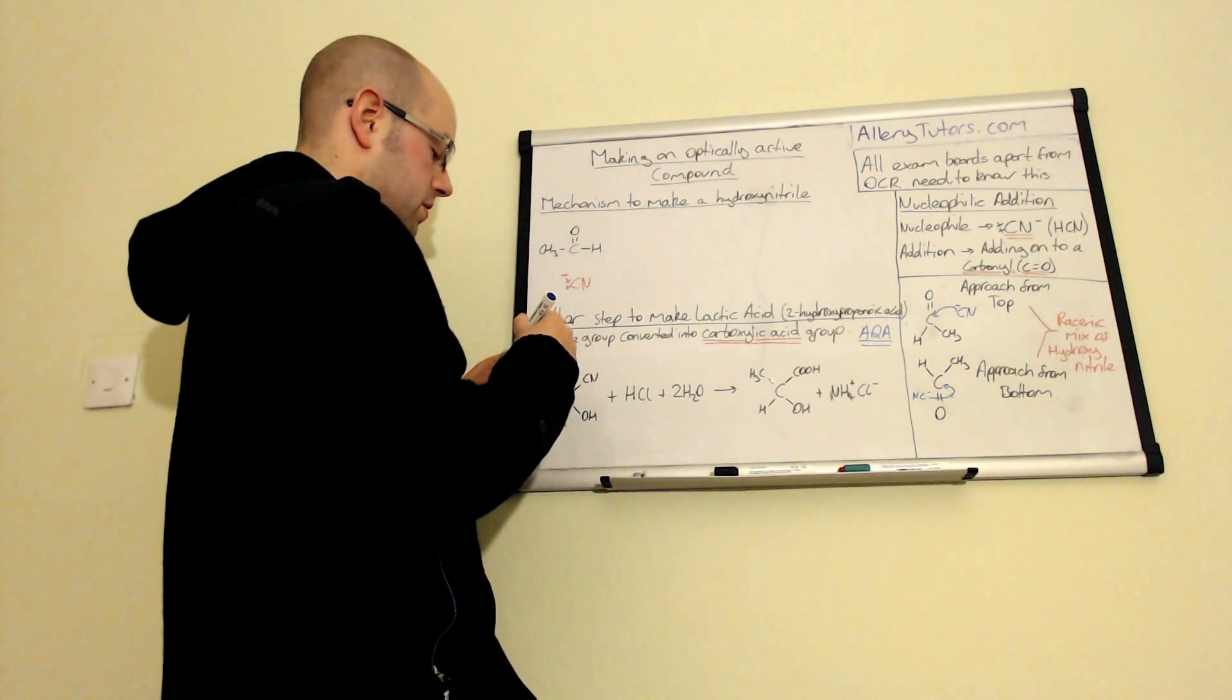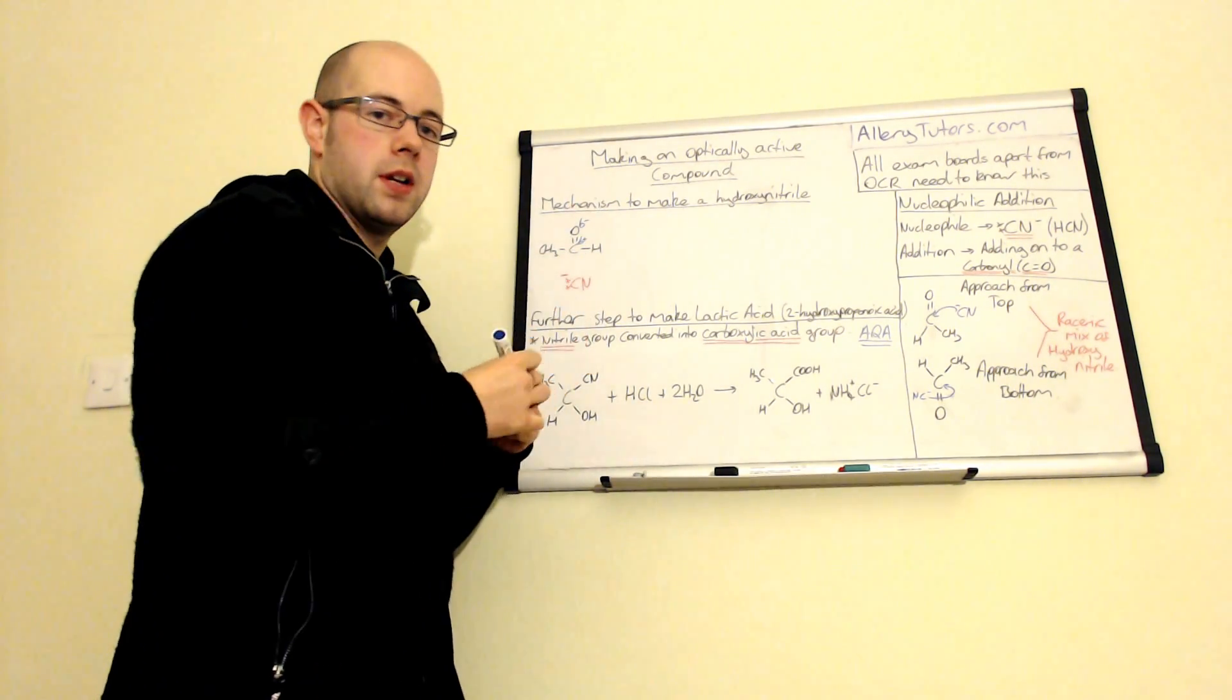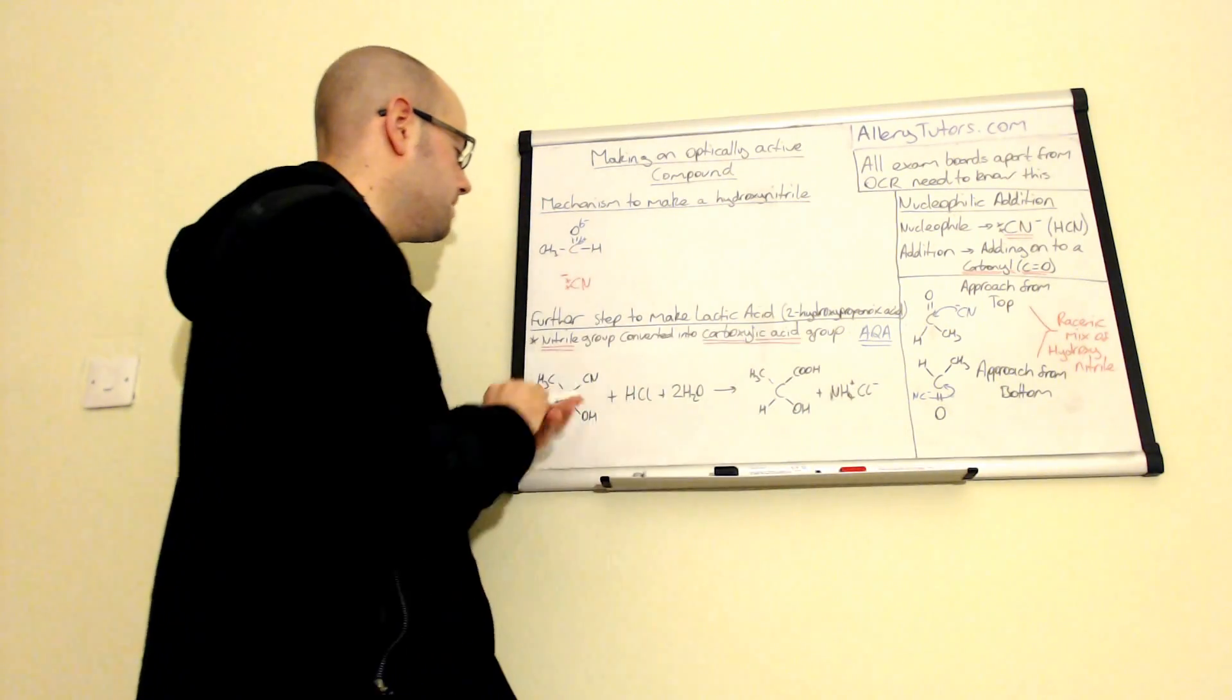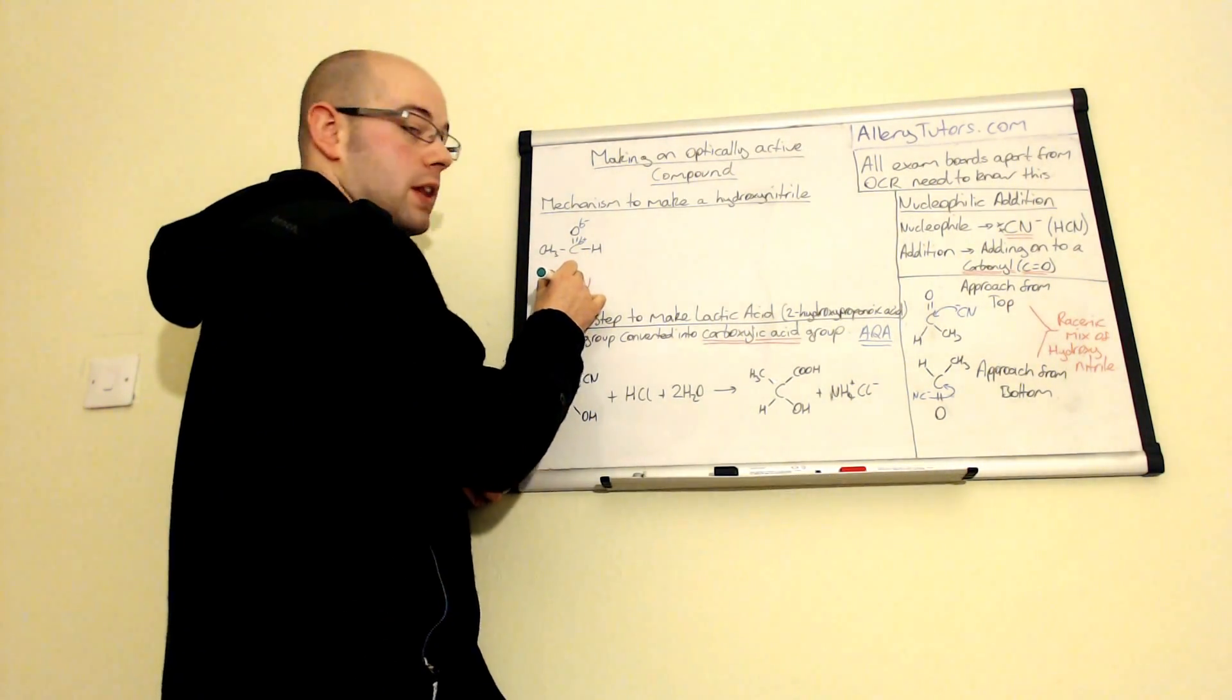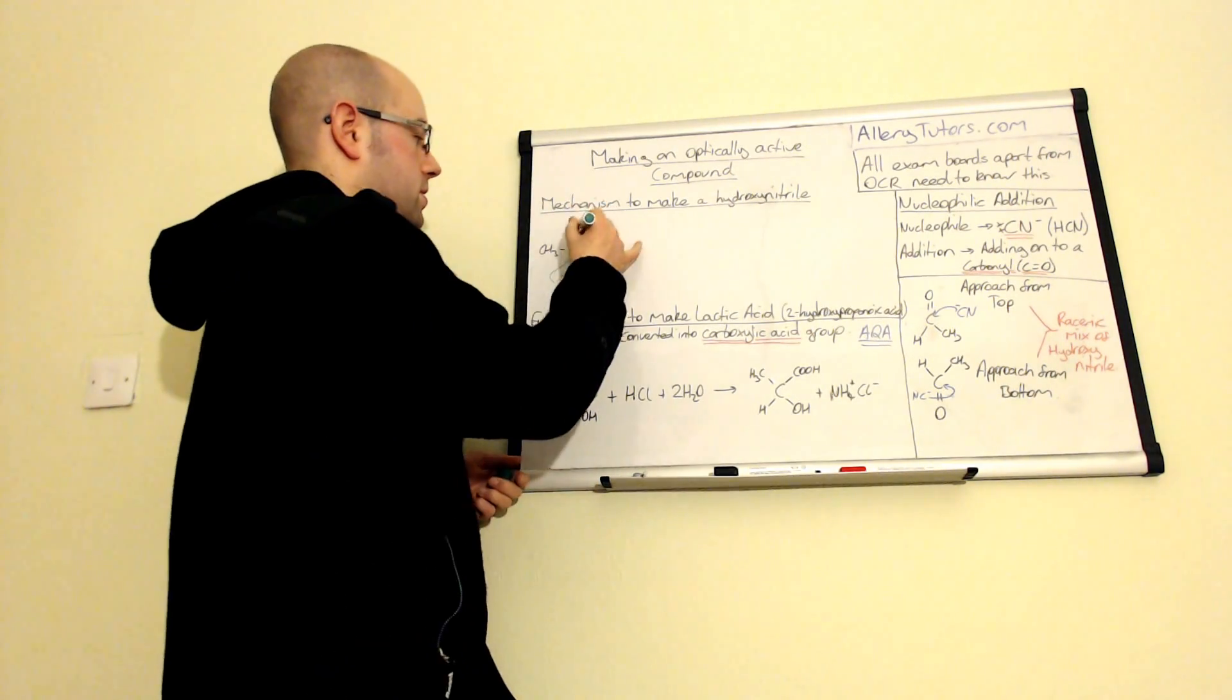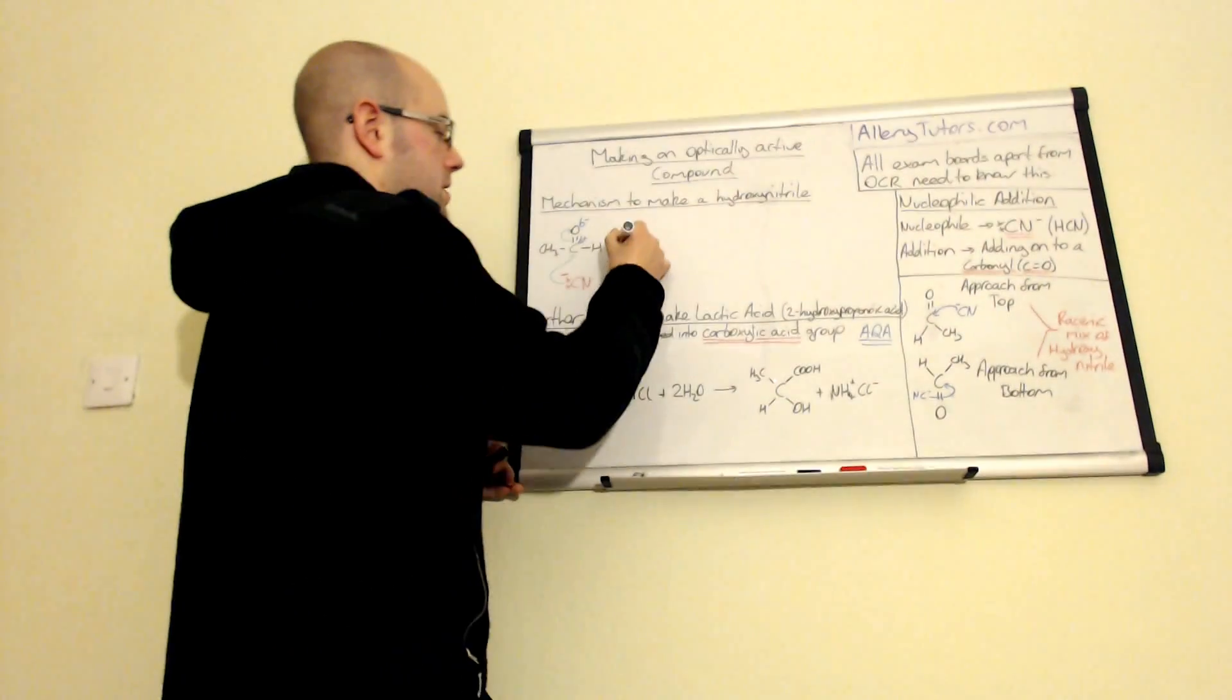And so what we're going to do is we're going to react this with our cyanide. Now I'm just going to put our delta positives and delta negatives on here. So our delta negative is on there and our delta positive is on that carbon. Now this is important because we need to know exactly where the cyanide is going to react. So we're going to draw our arrow. So arrows go from where the electrons are going from to where they're going to. So they go from the cyanide to the carbon. And then this double bond has to break and the electrons will actually get pushed onto that oxygen on the top there.